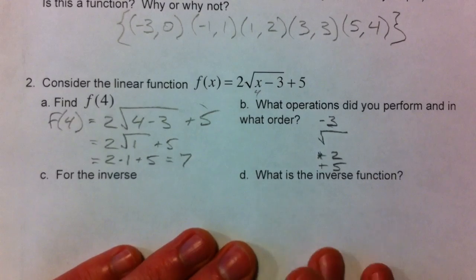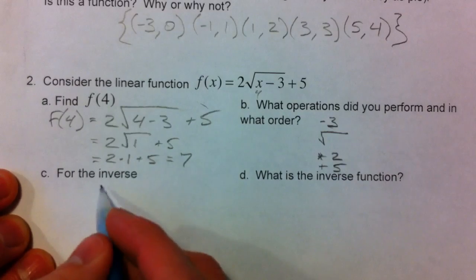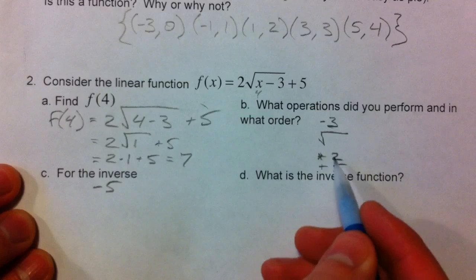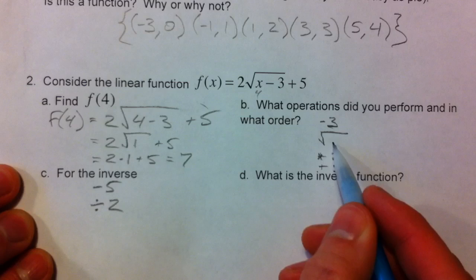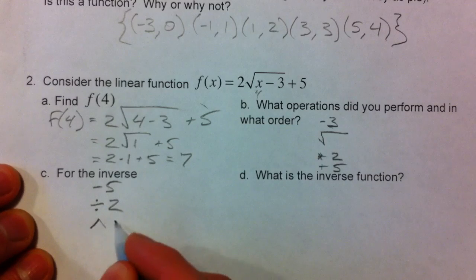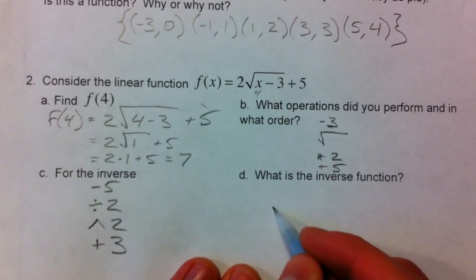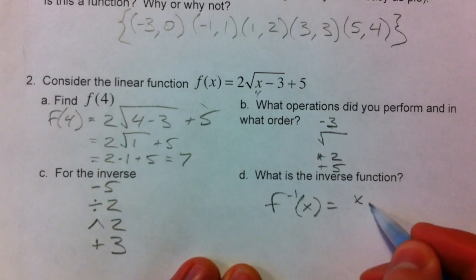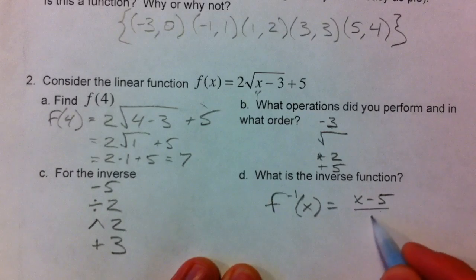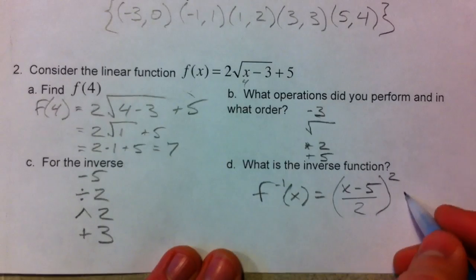So we do that in the exact opposite order. First, do the opposite of adding 5: subtract 5. Then the opposite of multiplying by 2: divide by 2. Then the opposite of square rooting: squaring, raising to the second power. Opposite of subtracting 3: add 3. So the inverse function f⁻¹(x) is: take x, subtract 5, divide by 2, square it, then add 3.